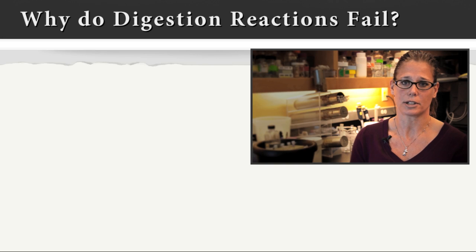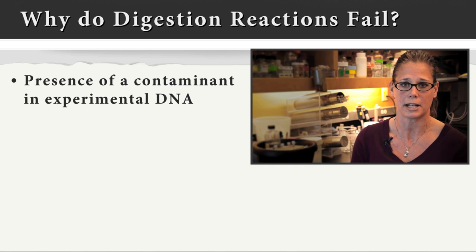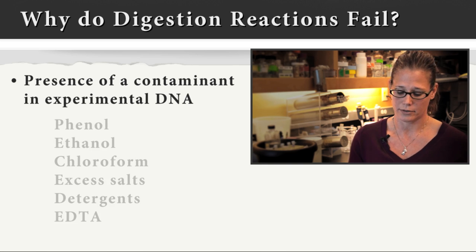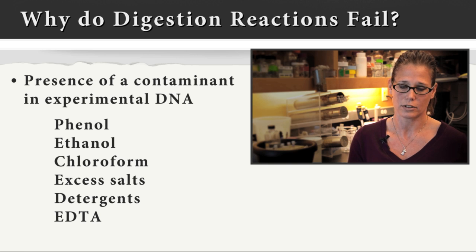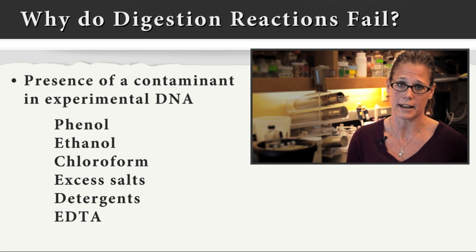The most common reason a restriction digestion fails is the presence of a contaminant in your experimental DNA that's inhibiting the restriction enzyme. Contaminants include phenol, ethanol, chloroform, excess salts, detergents, or EDTA.